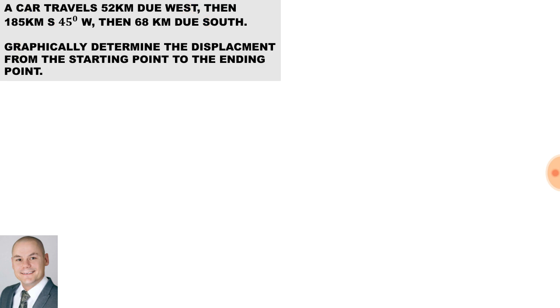Okay, our final example. A car travels 52km due west, then 185km southwest at 45 degrees and then 68km due south. And we will graphically determine the displacement from the start point to the end point.